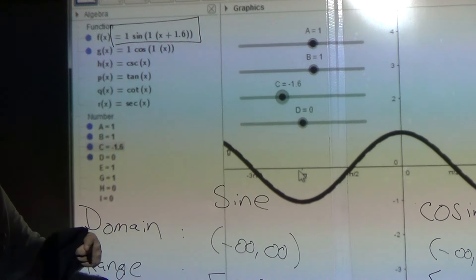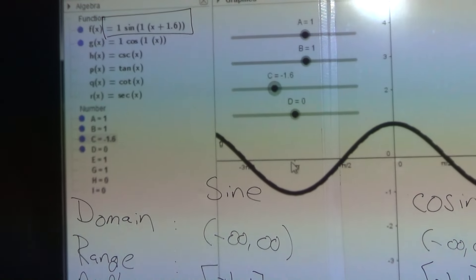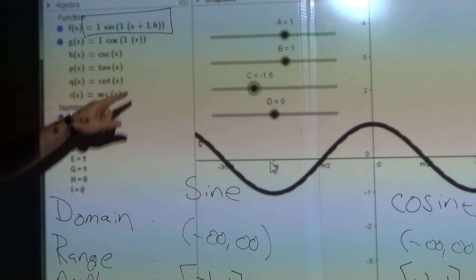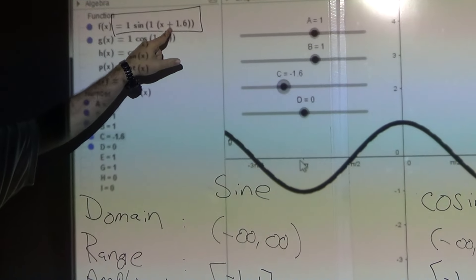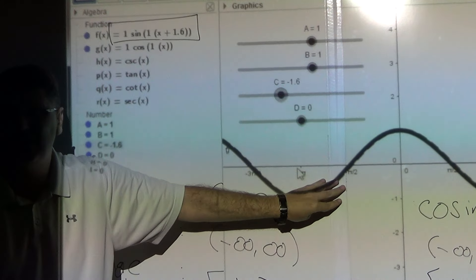And then you start talking about how you move it around from the basic graph, from what's called the parent function. Now, this is still cosine wave. Sine of x plus 1.6 is approximately the cosine wave because they line up. You can see that.